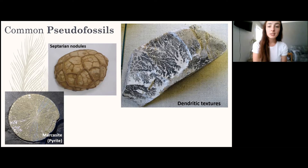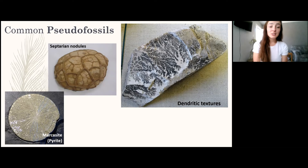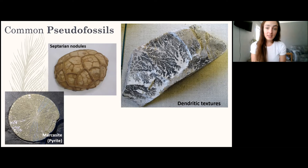Pseudofossils are important to recognize because you don't want to mistake something for life that isn't. Examples include marcasite, a polymorph of pyrite that forms radial, perfectly circular crystals that look biological. Septarian nodules look like eggs but are formed by natural processes. Dendritic textures are formed by dissolution and water transport through fractures in rocks, creating branching structures that might be mistaken for carbonized plant fossils.